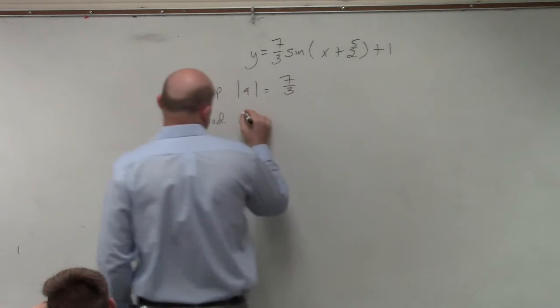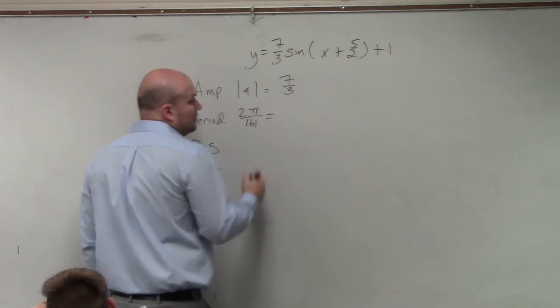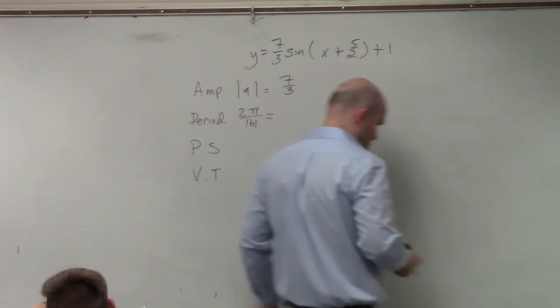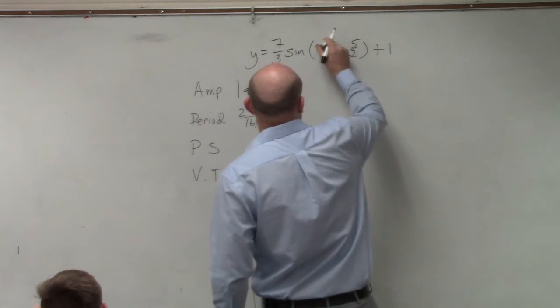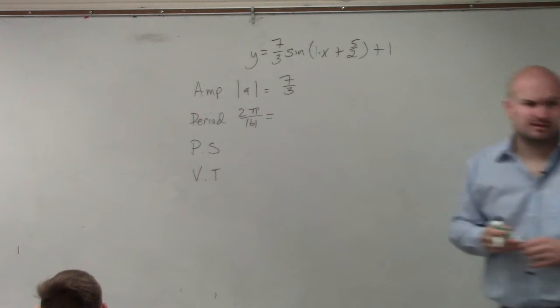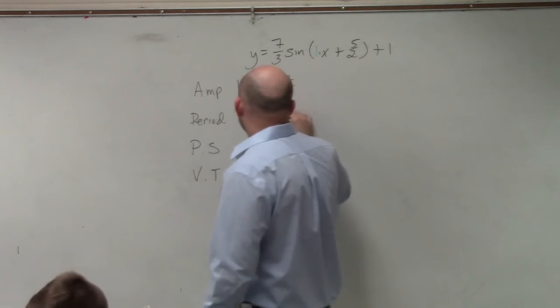The period is, remember, 2π divided by absolute value of b. b in this case is the coefficient of x, which you can see is just going to be 1. So, 2π divided by 1 is just going to be 2π.